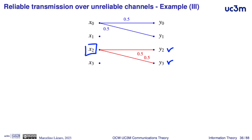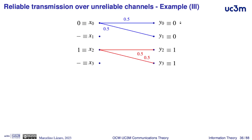And if we see Y2 or Y3, for sure the transmitted symbol was X2. In this case, it is possible to have a transmission with zero probability of error. But there is a price to pay, and the price is information — the amount of information that is transmitted per channel use. Because if we only transmit two symbols, we can only encode 1 bit per channel use. Seeing Y0 or Y1 for sure will be a zero, seeing Y2 or Y3 for sure will be a one. We only transmit a single information bit per channel use.